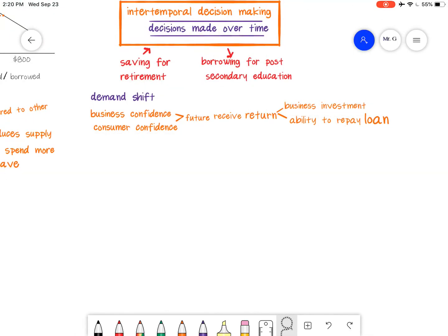So we have a demand shift that can happen. Business confidence and consumer confidence will affect demand. We're talking about what things can shift demand. Demand is for how much you borrow. Business confidence, if they feel like their business isn't going to do well, you think about COVID times, they're like we're not sure how things are going. Not a lot of businesses are expanding because they're not sure how things are going to be. So if that's the case, then the demand might shift and decrease.